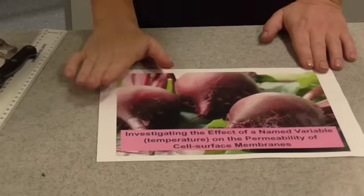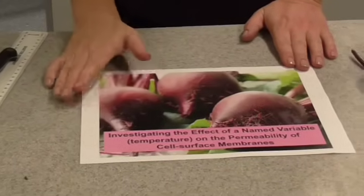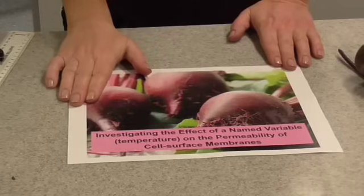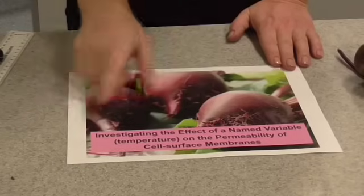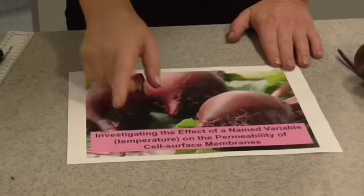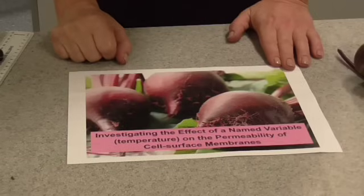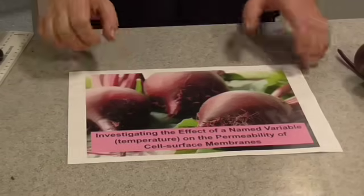I'm going to show you how to do one of the required A-level biology practicals. This is for AS and A-level, where you're going to investigate the effects of a named variable — in this case temperature — on the permeability of cell surface membranes.